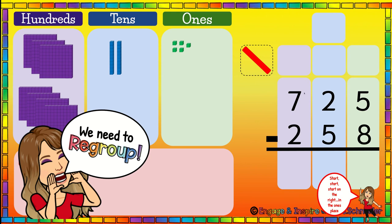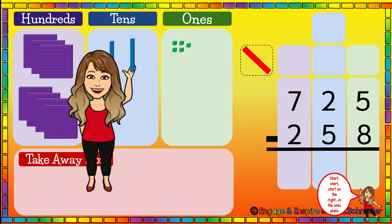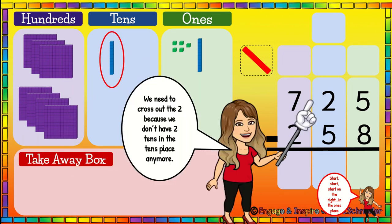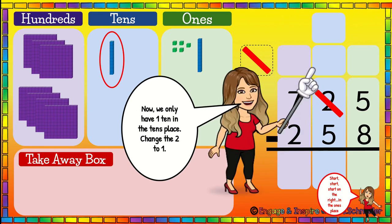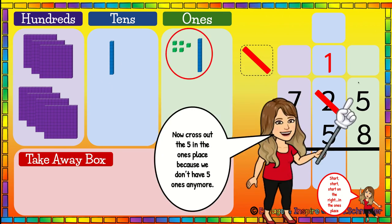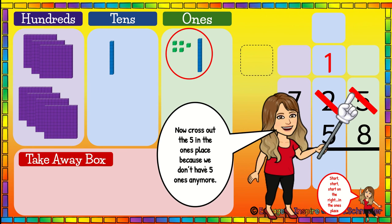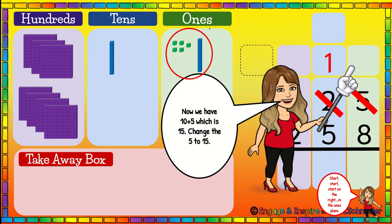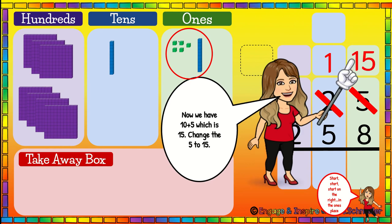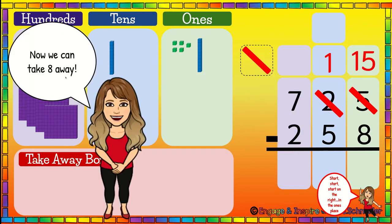If we have five cookies, can we give eight away? No, we need to regroup. Now that we regrouped that one ten, we need to cross out the two in the tens place because we don't have two tens anymore. How many tens do we have there? One. So we're going to cross out the two and change it to a one. Now we're going to cross out the five ones because we don't have five ones anymore. Now we have ten plus five, which is fifteen. Now we have enough ones that we can give eight away.